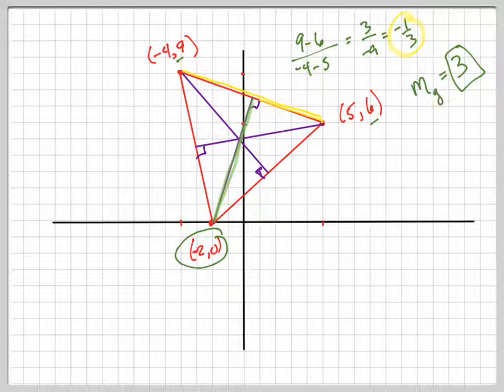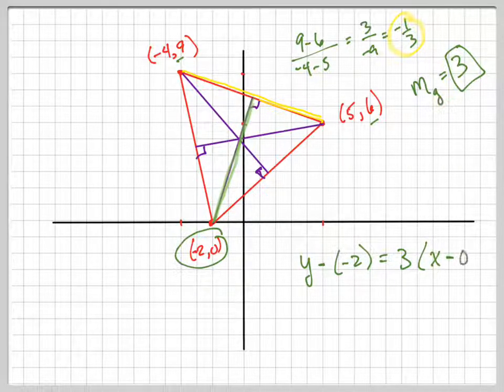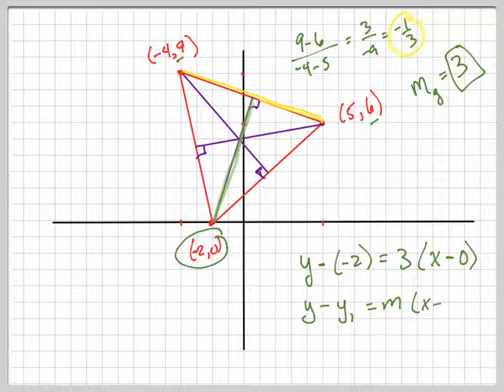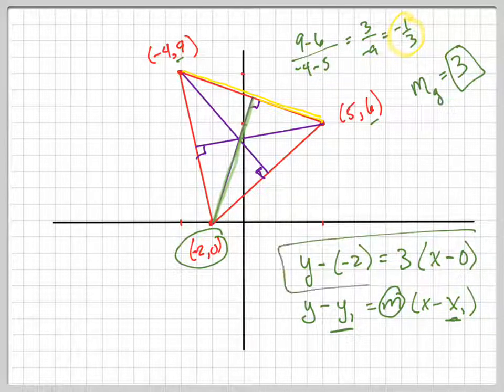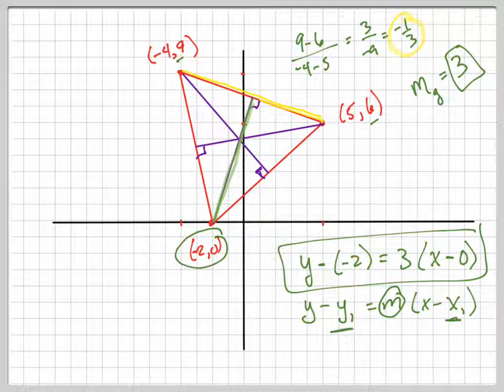I'm going to use point-slope form. y minus y sub 1 equals the slope times x minus x sub 1. That's the point-slope formula. Here's my slope, and here's my point, x1, y1. See how I just plug them straight in to get that equation? So that's your point-slope formula. So there's one equation.